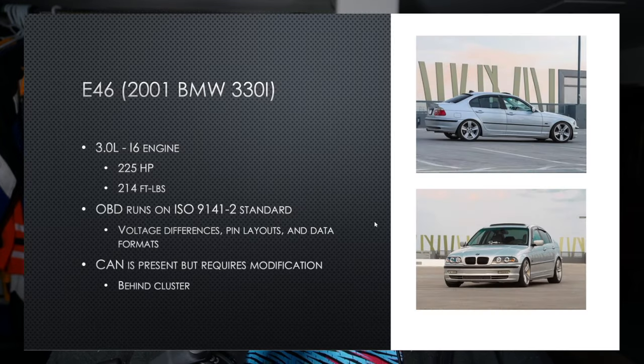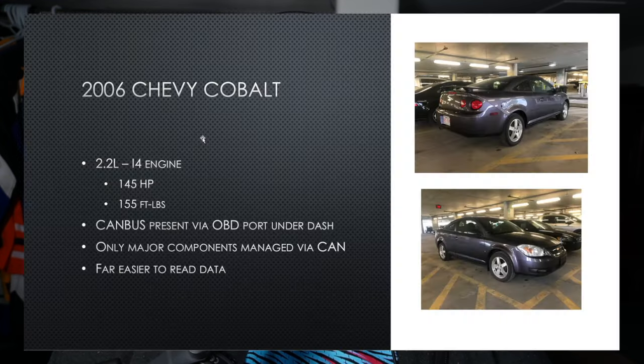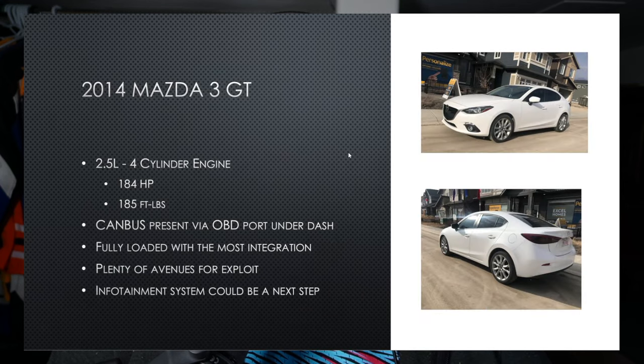The last thing we needed, of course, was a car. You can use any car you want — all cars have a CAN bus — but we quickly found out not all cars have CAN bus on the OBD port. I had a 2001 BMW at the time, and European cars run their OBD ports on the ISO standard, meaning different pin-out and voltage differences. My car has a CAN bus, but the easiest access is the harness behind the cluster. So we found two other candidates: my buddy's Chevy Cobalt and my other friend's Mazda 3, both of which have the CAN bus present on the OBD port.